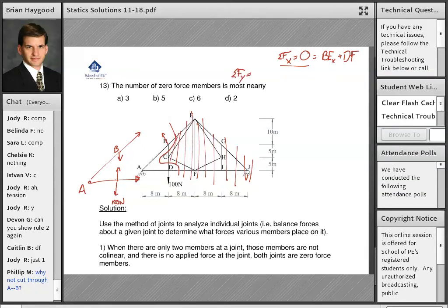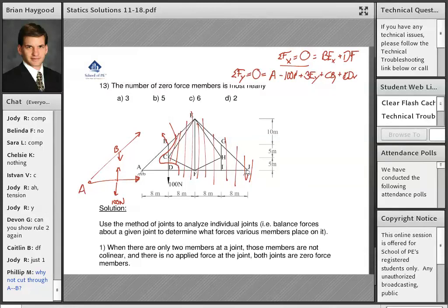We can look at our other equation, sum of forces in the y direction equals zero, and that's going to involve reaction force at A, minus the 100 newton load, plus BEY, plus CBY, or I guess we could do minus, whatever. CD is in the y direction as well. That's a lot of unknown stuff. Now, you and I know some of those are zero force members and whatnot, but that's a lot of stuff to handle.